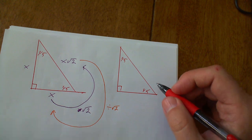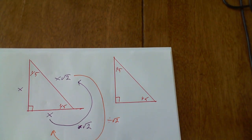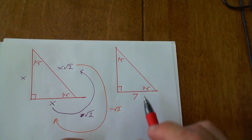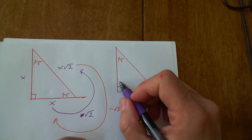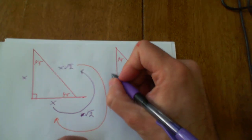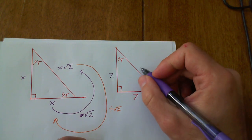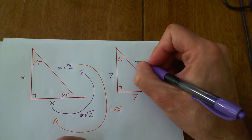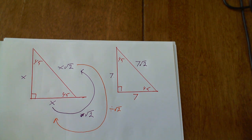Let's say we're given one 45 side as seven in a 45-45-90 triangle. Since it's an isosceles right triangle, the other leg is also seven. To find the hypotenuse, I multiply by the square root of two and get seven times the square root of two. Remember, the triangles can twist and turn around, but that's all you've got to do.